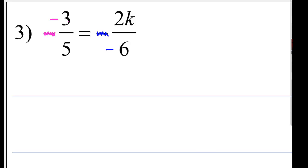So first of all, we are going to take the numerator, the top, we are going to multiply by the denominator, the bottom of the other one. So that's negative 3 times a negative 6, so that's a positive 18. Then you take the denominator, the numerator of the other one, multiply it together, so that's 5 times 2k, that will give you a positive 10k.